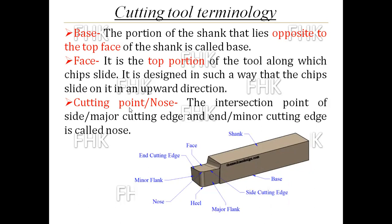Next is the cutting point or nose. The intersection point of the side or major cutting edge and the end or minor cutting edge is called the nose. The side cutting edge is also called the major cutting edge, and the end cutting edge is also called the minor cutting edge. The intersection point of the major cutting edge and minor cutting edge is called the nose, or cutting point.